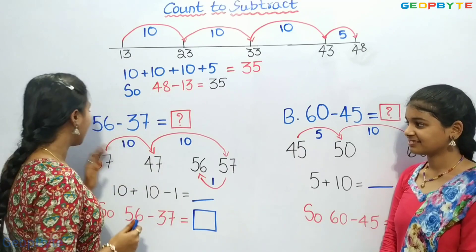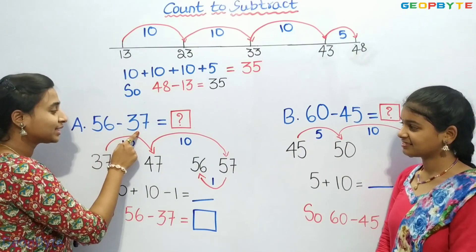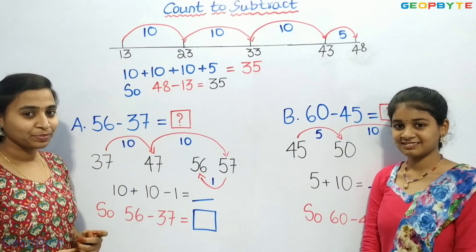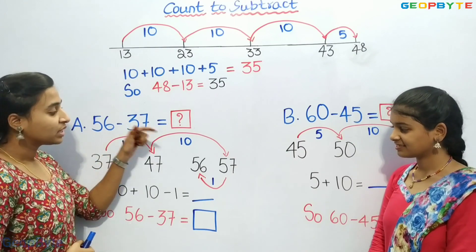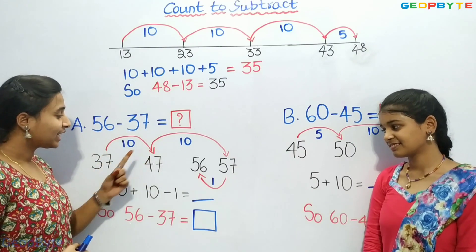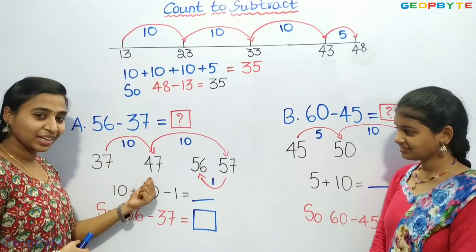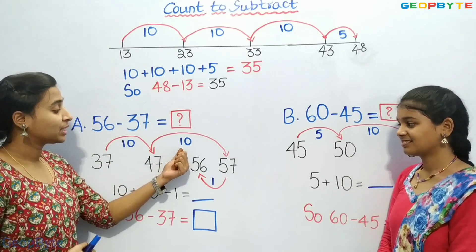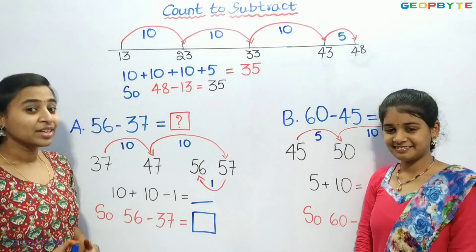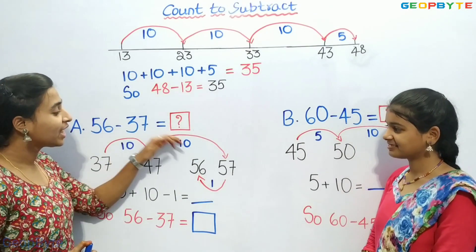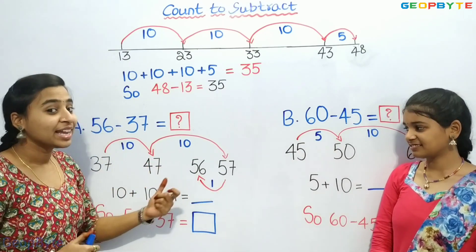Now let us see the next example. We have 56 minus 37. I will count in the form of jumps — that is, 10 jumps. 37 plus 10 is 47. 47 plus 10 is 57. But we have 56, not 57. Forward direction is positive, and the reverse direction is negative — that is, the backward direction.